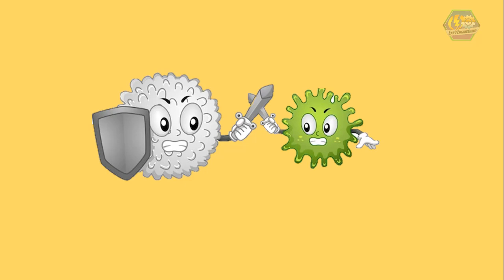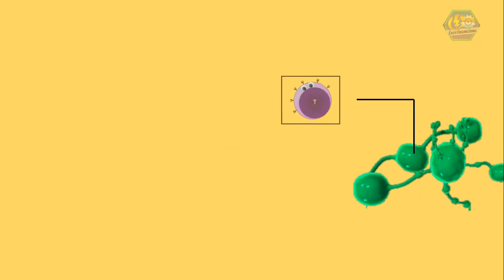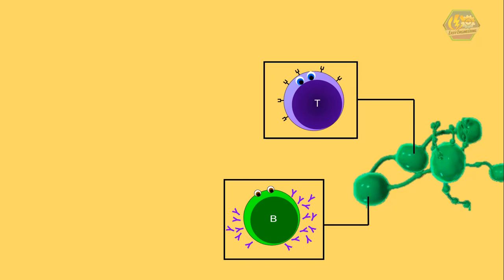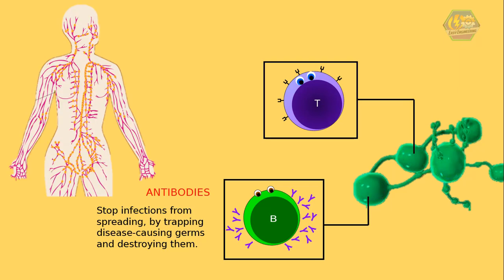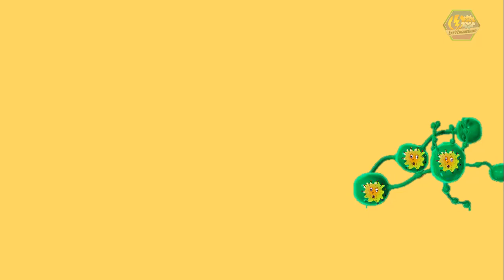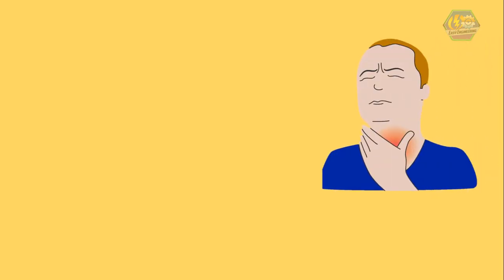Those germs are filtered out in the lymph nodes. Inside the lymph nodes, lymphocytes called T cells and B cells help the body fight infection. These cells mostly make antibodies that stop infections from spreading by trapping disease-causing germs and destroying them. Most of our lymph nodes are in clusters in the neck, armpit, and groin area. When a person has an infection, germs collect in the lymph nodes.